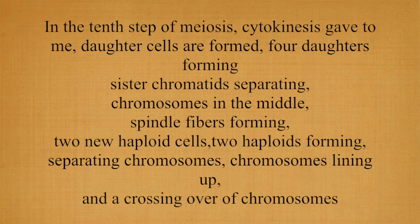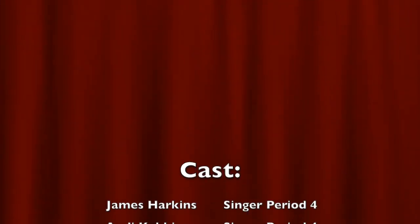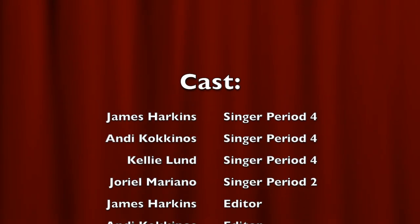In the tenth step of meiosis, where the phase 2 gave to me, daughter cells are formed, four daughters forming, sister chromatids separating, chromosomes in the middle, spindle forming, two new haploid cells. Two haploids forming, separating chromosomes, chromosomes lining up, and a crossing over of chromosomes.